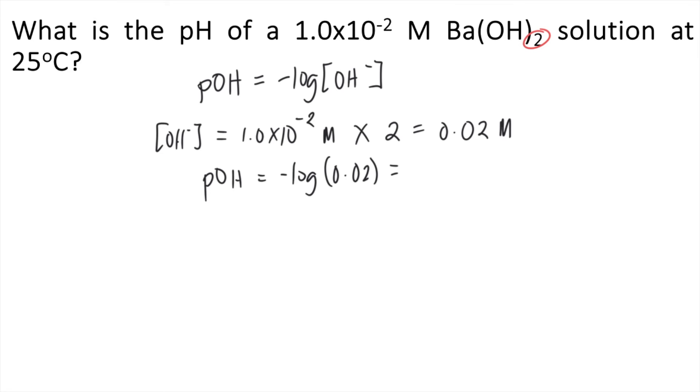If you solve that in your calculator, that's equal to approximately 1.70. But that's just the POH, the problem is asking for the pH at 25 degrees Celsius. At 25 degrees Celsius, pH plus POH is equal to 14.